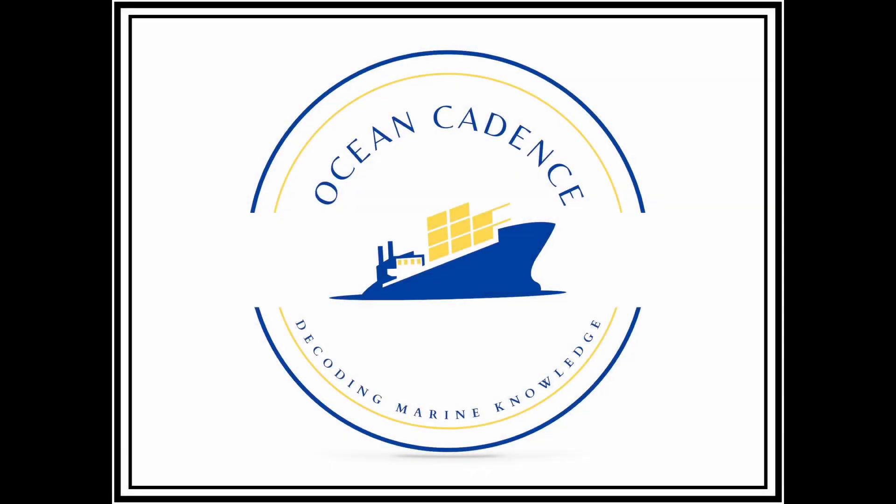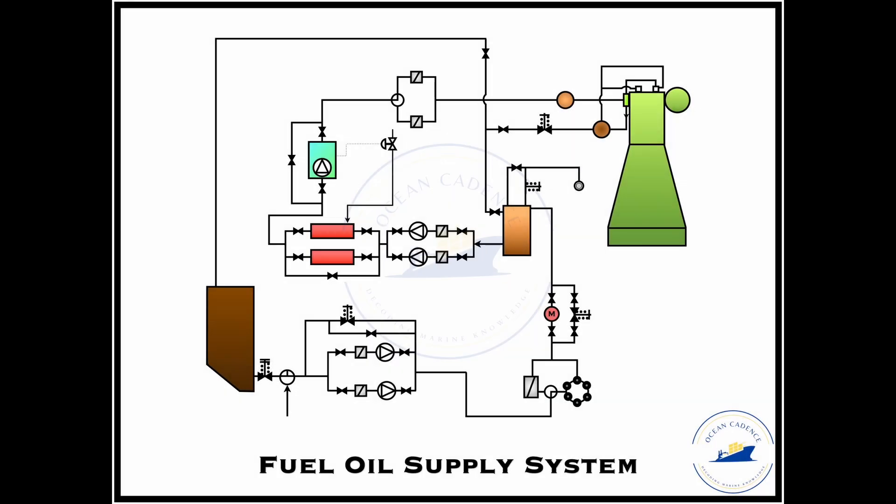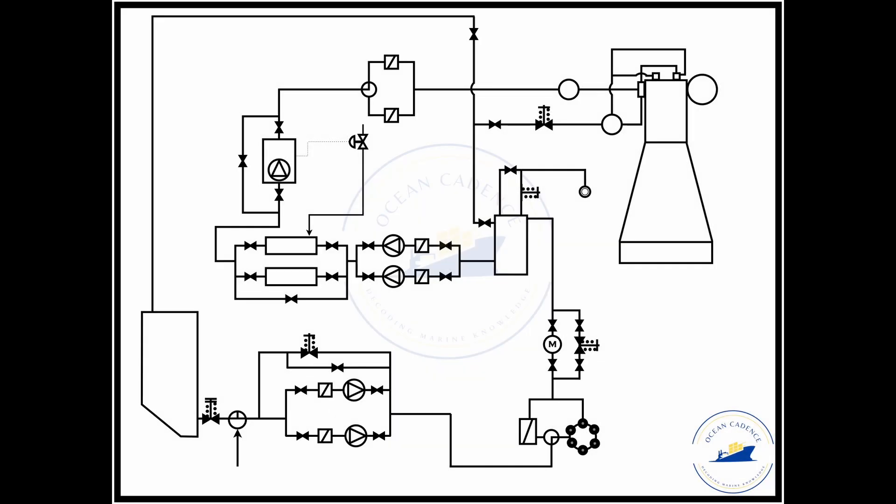Hello everyone and welcome to Ocean Cadence. Today we will be undertaking the topic of fuel oil service and supply system—that is how the fuel oil is supplied through the adequate circuit to the ship's main engine for running. As the topic is about the fuel oil supply and service system, we have ensured to undertake only the elements after the heavy oil, that is the fuel oil, has reached the service tank itself. Any elements before that would either come into the transfer system or the purification system accordingly.